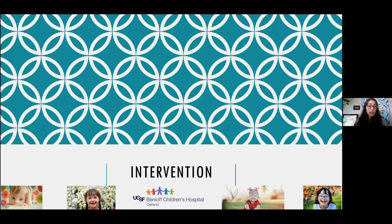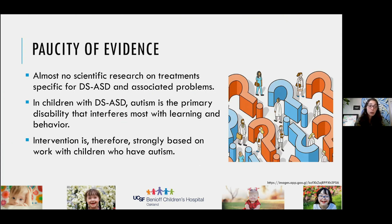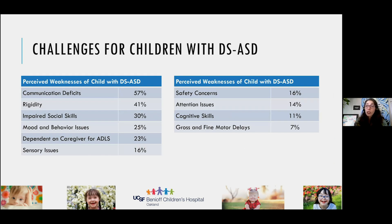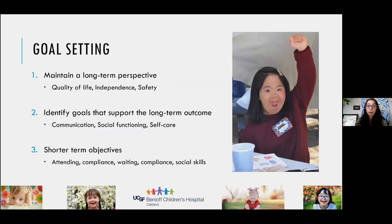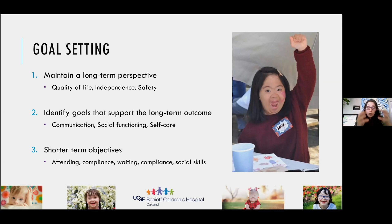Now you have identified someone with a dual diagnosis — how do you intervene? We don't have a lot of evidence on what works, so we go with what parents report as challenges: communication deficits, rigidity, impairment in social skills, mood and behavior issues. It's really important to first set goals with a long-term perspective — what do we want for this person's life? — and then use that to develop short-term objectives to guide therapy.